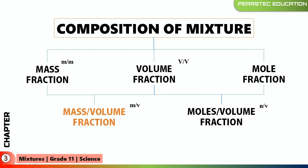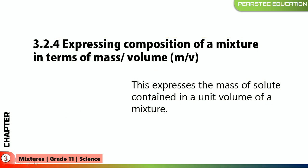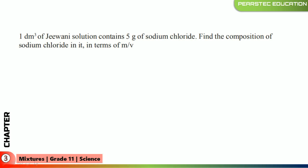Now it's time to understand mass-volume fraction. Expressing composition of a mixture in terms of mass and volume: you can have the mass of some solid and the volume of some liquid. This expresses the mass of solute contained in a unit volume of a mixture. For example, one cubic decimeter of a given solution contains 5 grams of sodium chloride — here you get a volume and a mass.